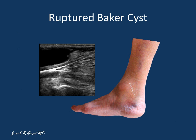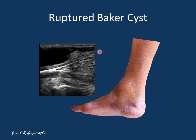Here is another patient complaining of black and blue lesions of the knee who also heard a pop in the back of the calf. On sonographic examination, he was found to have a ruptured Baker's cyst which was still leaking into the calf, with residual effusion in the cyst. He was treated with decompression of the remaining cyst to prevent further leakage of fluid into the calf.